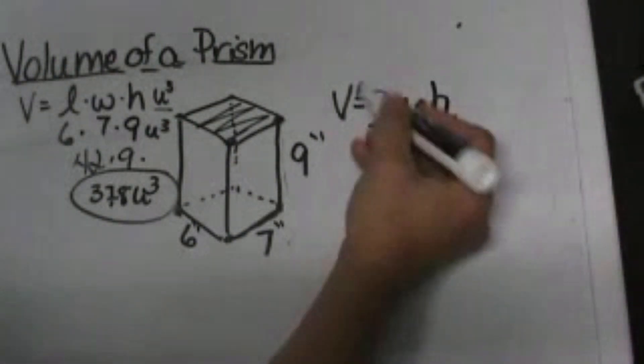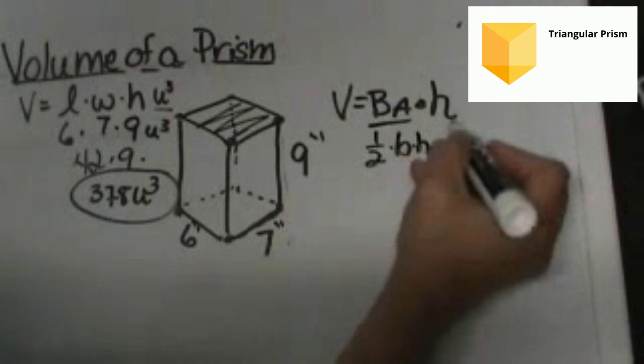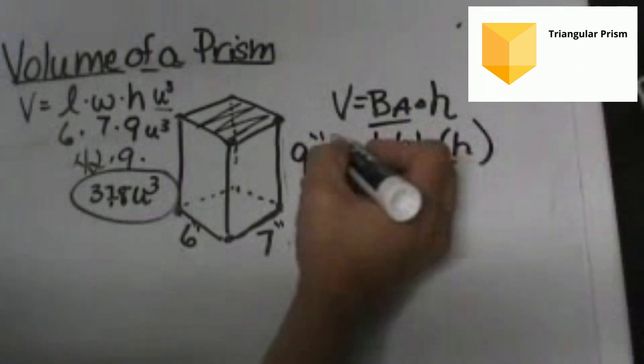So if you have a triangular base, you're going to use the one-half base times height formula, then times the height of the whole prism to find that volume.